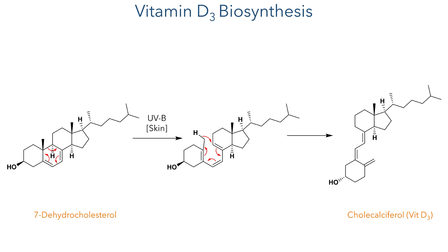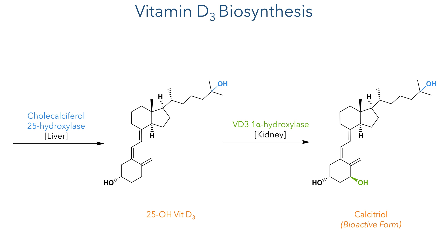One example of these precursors is 7-dehydrocholesterol. Upon irradiation with UV light this undergoes an electrocyclic reaction, breaking open the B-ring of the secosteroid framework and forming a triene. This then isomerises through a sigmatropic rearrangement to form calcalciferol, more commonly known as vitamin D3. This is then oxidised in the liver by calcalciferol 25-hydroxylase and then oxidised once again in the kidney to form calcitriol, which is the bioactive form that interacts with vitamin D receptors.